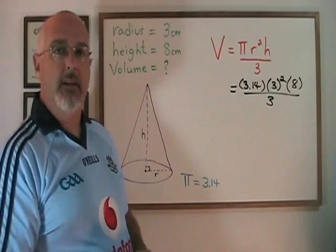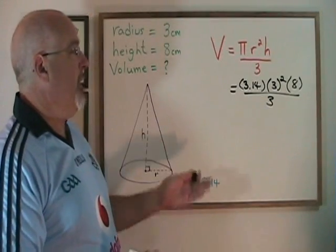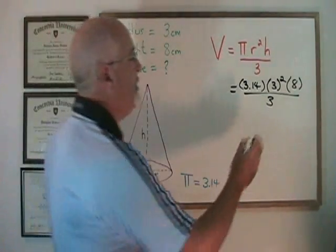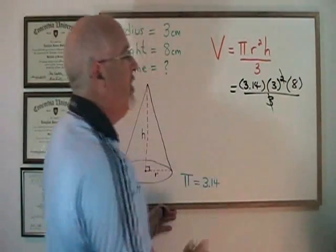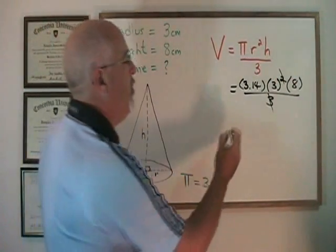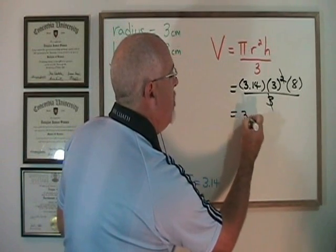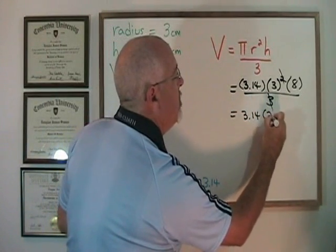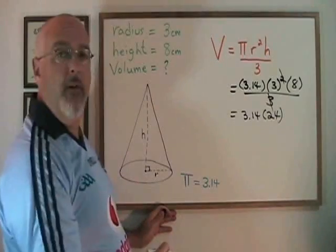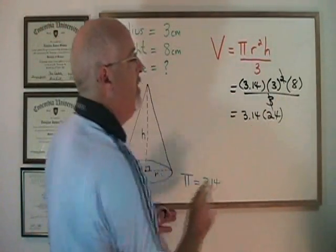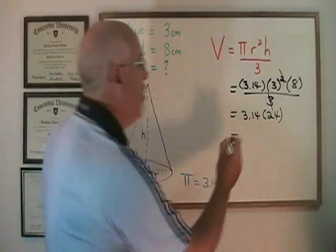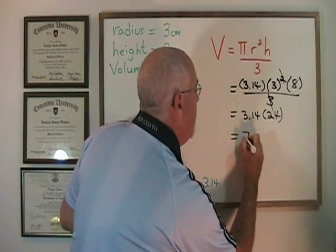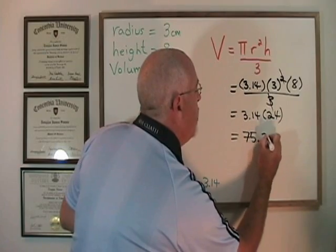Of course, you can use the steps of algebra that you prefer in order to simplify this. I'm going to cancel one of the 3's in the numerator with the one on the bottom. And we end up with 3.14 times 24. The 24 is the result of this 3 multiplied by the 8. And 3.14 times 24 is equal to 75.36.